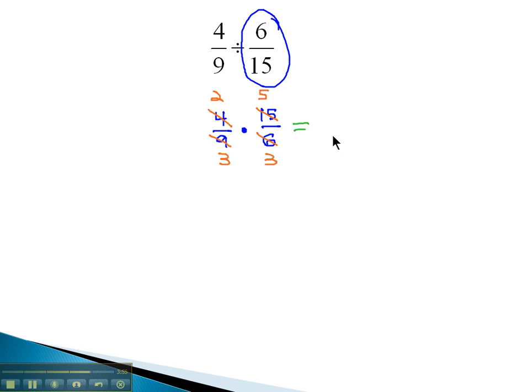And now that we've reduced everything, we can multiply the numerators and denominators together. 2 times 5 is 10 over 3 times 3 is 9, and we have our final quotient or product because we multiplied by the reciprocal of 10 ninths.